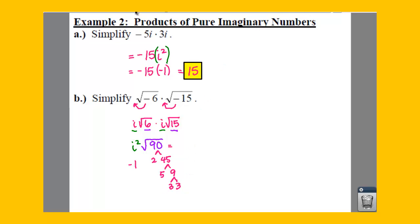That means these 3's are going to come outside of our square root. This 5 and this 2 are going to have to be left underneath and multiplied together.